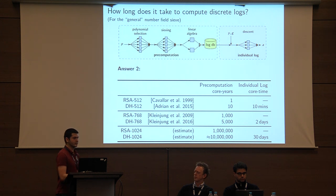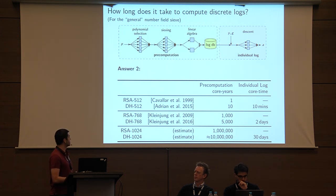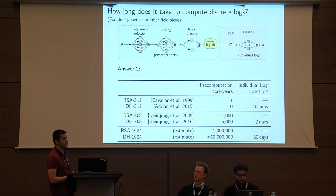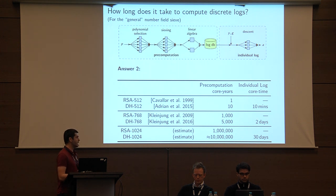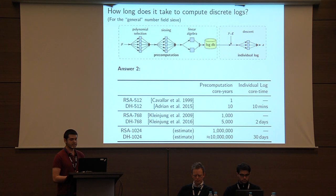As you heard in Thorsten's talk previously, for a 768-bit prime it might take about 5,000 core years for the first stage and then an average of two days to compute an individual log in the second stage. For a kilobit-sized prime, we estimate it would take about 10 million core years to run the number field sieve and then about a month to actually do the second stage.